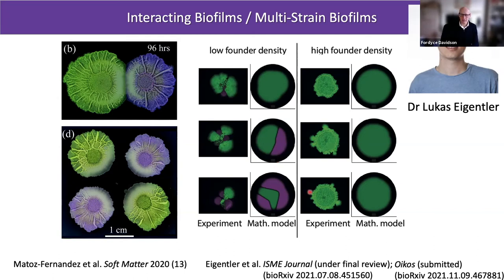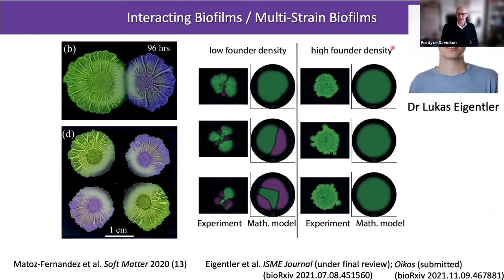Lucas has been able to define very precisely a metric which says: if I know where my initial cells were, I can tell you the probability that the outcome will be 50/50, that all the greens will dominate, or indeed that you'll get the perverse situation where the weaker strain dominates — more purple area than green. At higher founder densities you get what you expect: the strong competitor wins. At low founder densities, what we've uncovered is that it is not the competitive interaction which dominates the final competitive outcome — rather it is the access to free space.